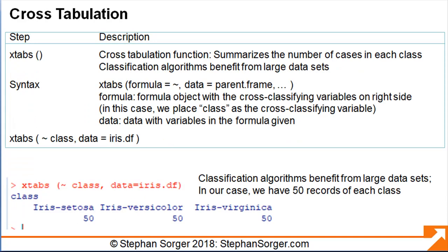Classification techniques benefit from large datasets for robust classification. We can check the number of records for each class by invoking the cross-tabulation function in R, called XTABS. The XTABS function takes the cross-classifying variable CLASS and the dataset iris.df. Executing the XTABS function, we see that the data has 50 records of each class.